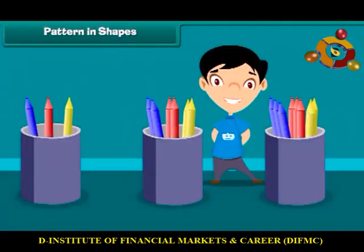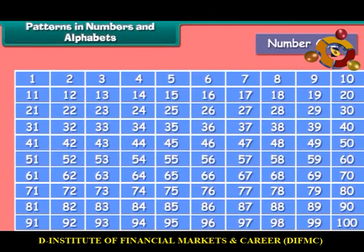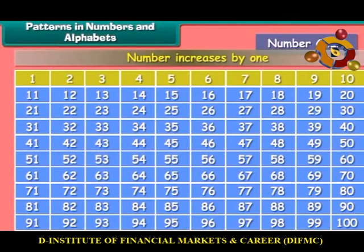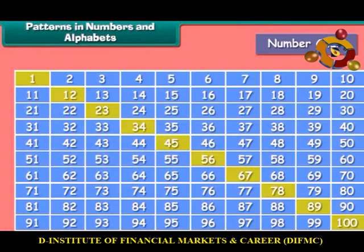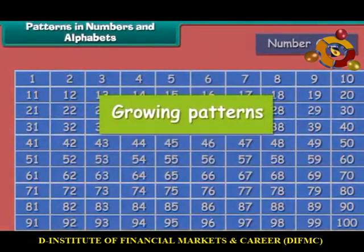Let us look at a different type of pattern. If you notice, the numbers of crayons are not exactly repeating — each color of crayon is increasing. This type of pattern is called a growing pattern. Look at the number chart: in rows the number increases by one, in each column the number increases by 10, and diagonally the number increases by 11. These are called growing patterns.